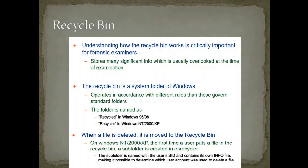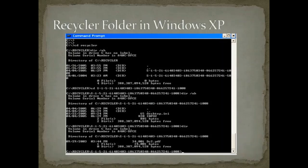In Windows XP, to access this, you open the command prompt and use the command 'cd recycler' to navigate to the Recycler directory. Using the 'dir' command, you can see the various Security Identifier directories present for each user. You can then navigate into a specific SID directory and use the command 'dir /a' to see its contents.